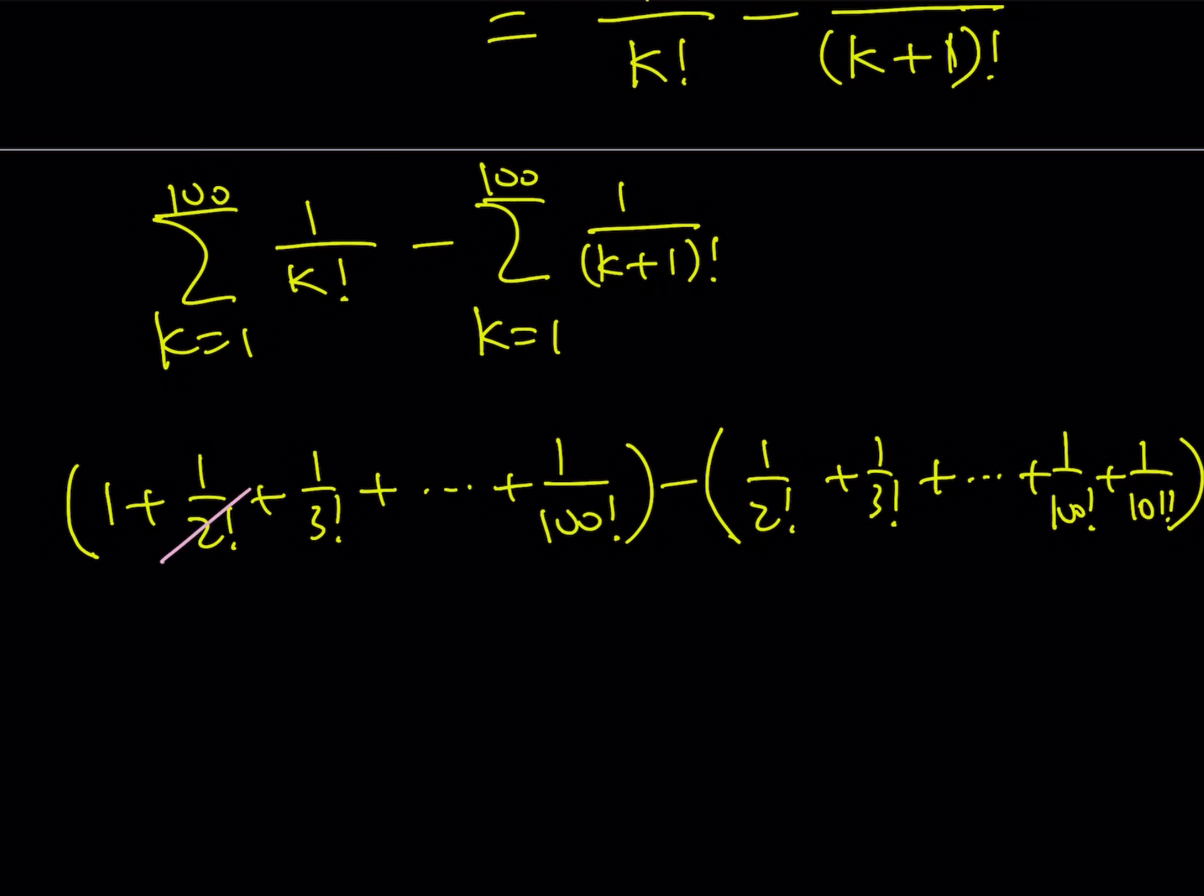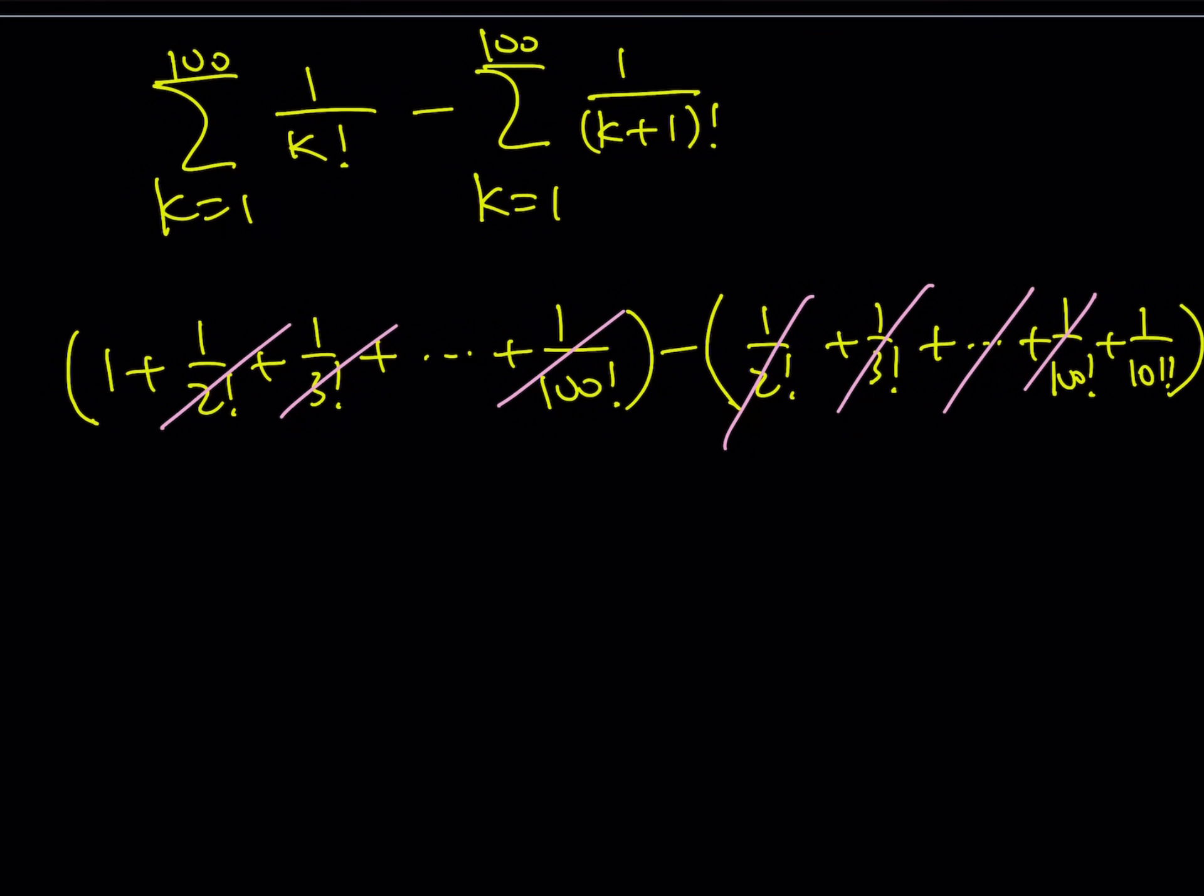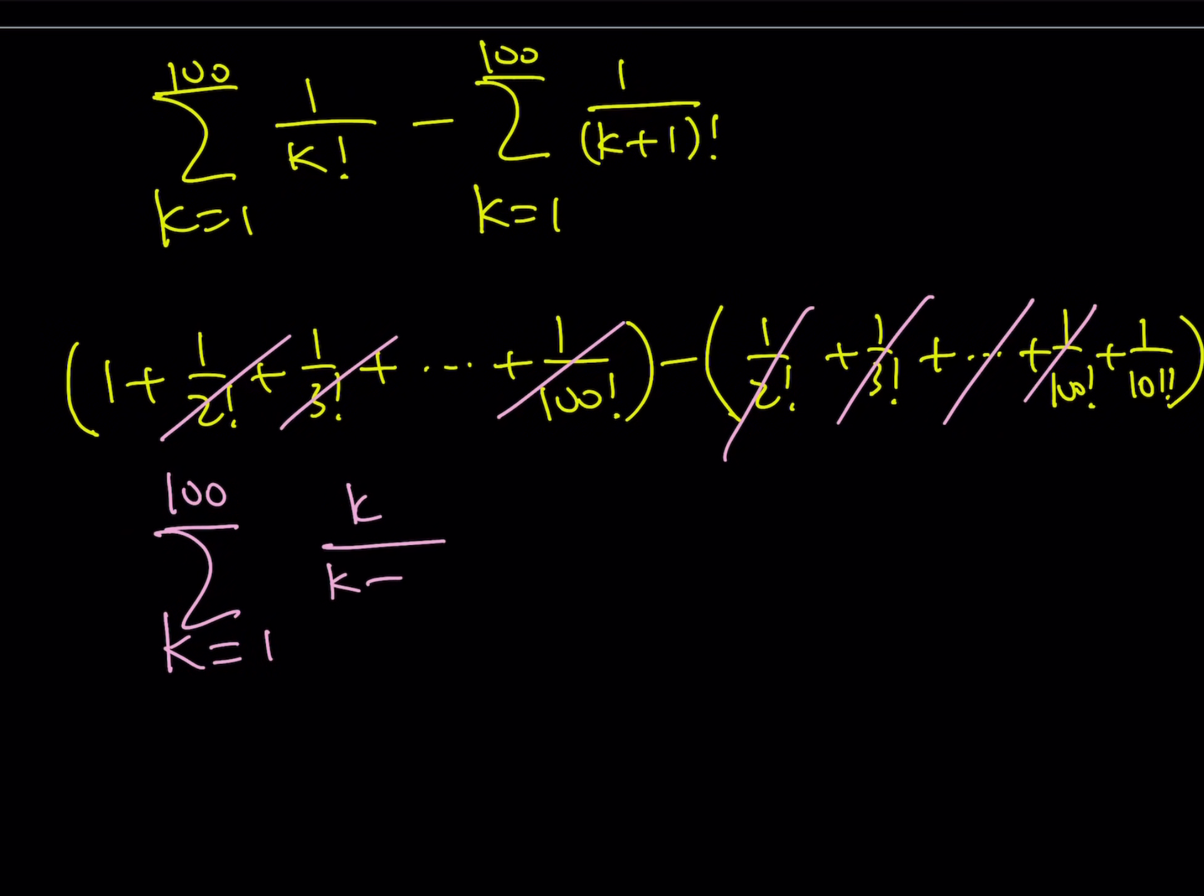Now here, between two, I mean two through two, two through 100, everything is going to cancel out. And now we're going to end up with two simple terms. So, our expression, which is k equals 1 through 100, k over k plus 1 quantity factorial can be written as 1 minus 1 over 101 factorial.